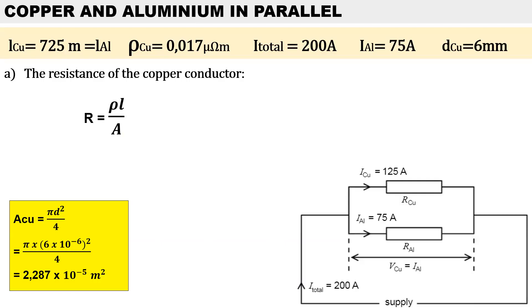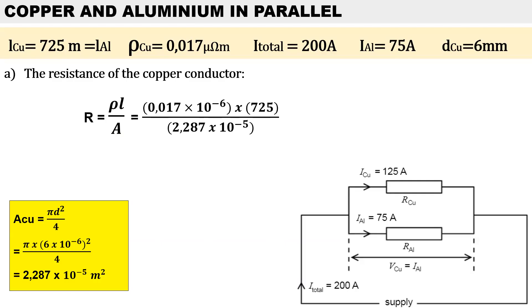Now we can calculate the resistance of the copper conductor. The resistivity of 0.017 micro ohm-meters — converted by multiplying by 10 to the power of minus 6 — multiplied by the length of 725 meters, divided by the area of 2.287 times 10 to the minus 5. Therefore, the resistance is 0.436 ohms.